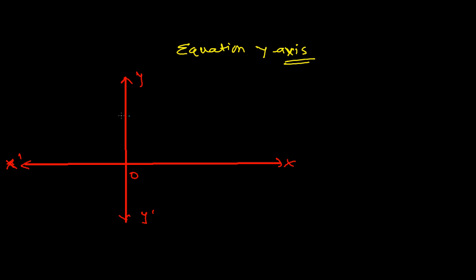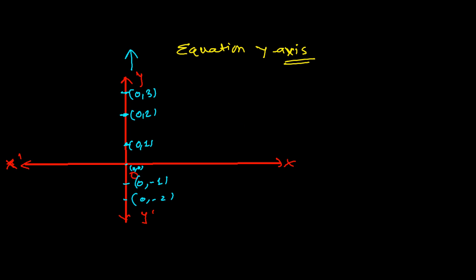On the y-axis, if you write any point — first section, second section, third section, and similarly negative sections — we are not moving in the x direction. The origin is zero comma zero, so this point is zero comma one, this one is zero comma two, this is zero comma three, and so on. In the negative y-axis we write zero comma minus one, zero comma minus two, and so on.